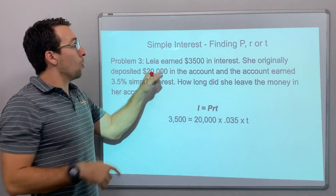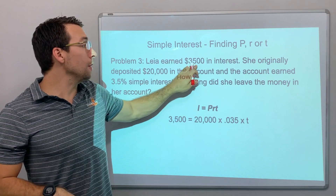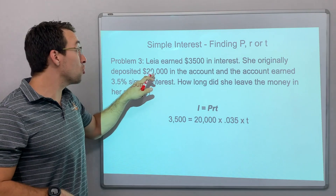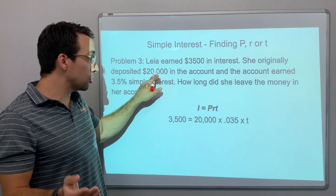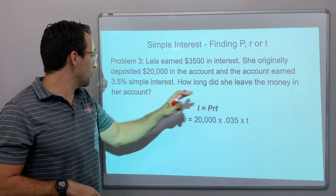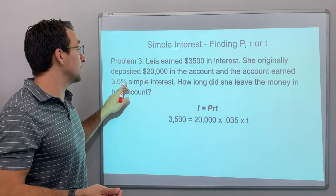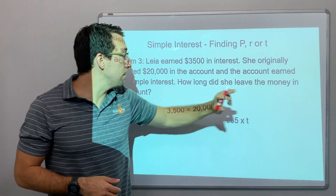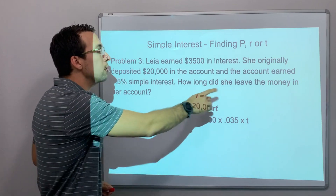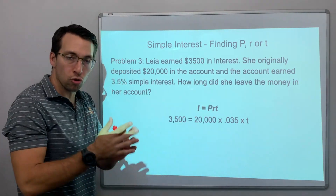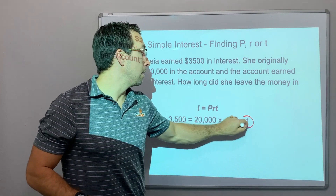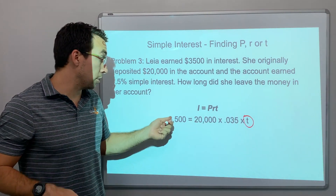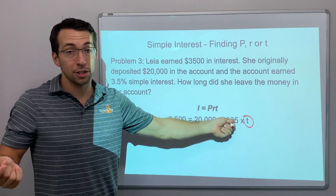So Leah earned $3,500 in interest. She originally deposited $20,000 in the account, and the account earned 3.5% simple interest. That's a pretty good interest rate. How long did she leave the money in her account? We don't know the time — the duration. We don't know T, and that's what we're looking for. We know the principal, we know how much she earned in interest, and we know the rate at which she earned the money.